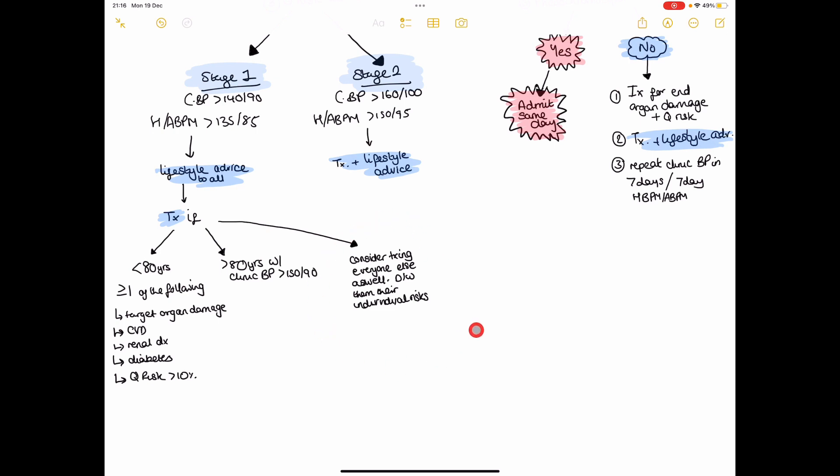And then you've got everybody else who doesn't have any extra diseases, their Q-risk score is less than 10%. You can be less aggressive with these patients.